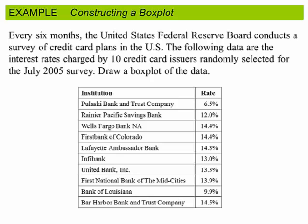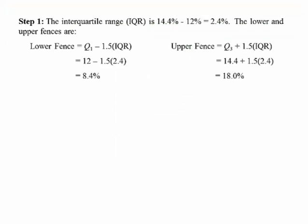Let's do an example. This is the United States Federal Reserve Board data. Let's draw a box plot of the data. We're going to use the quartiles computed from StatCrunch.